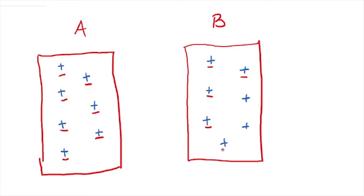When we say that a body is positively charged, it doesn't mean the body only has positive charges. It simply means that the body has more positives than negatives — the negatives are always there. Similarly, when we say a body is negatively charged, it simply means there are more negative charges, more electrons, more negatives than positives. In other words, the net charge on the body is negative.